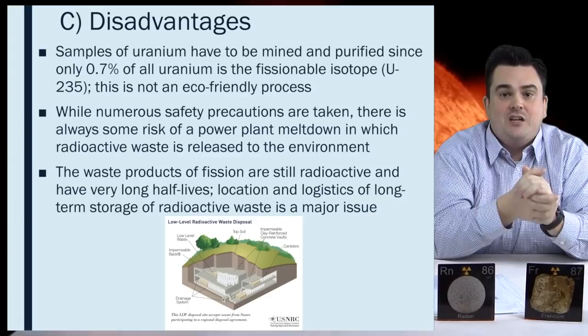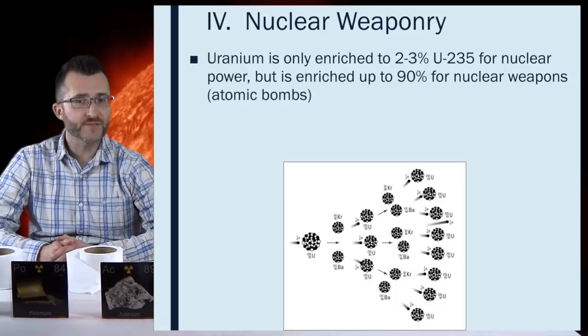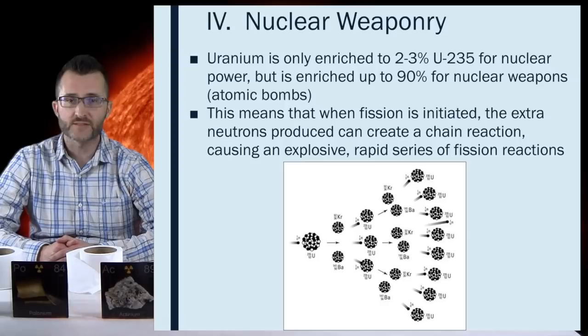Nuclear Weaponry. Uranium is only enriched to 2-3% uranium-235 for nuclear power, but is enriched up to 90% for nuclear weapons or atomic bombs. This means that when fission is initiated, the extra neutrons produced can create a chain reaction causing an explosive rapid series of fission reactions.